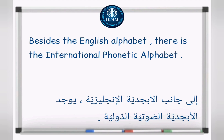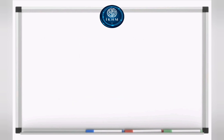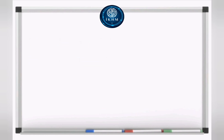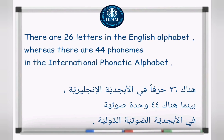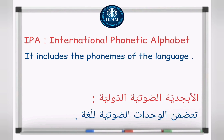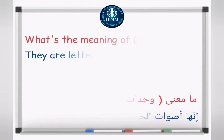Besides the English alphabet, there is the International Phonetic Alphabet. What's the difference between them? There are 26 letters in the English alphabet, whereas there are 44 phonemes in the International Phonetic Alphabet (IPA). It includes the phonemes of the language.